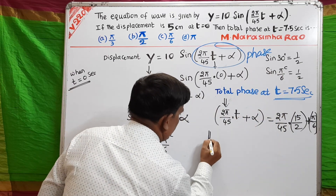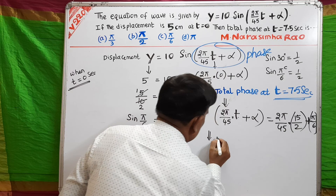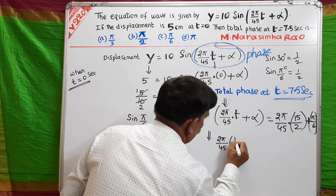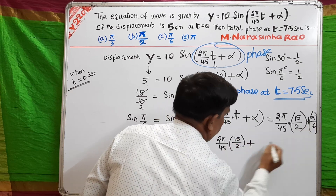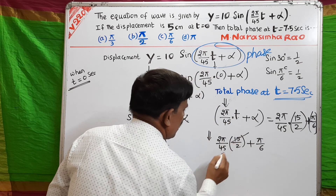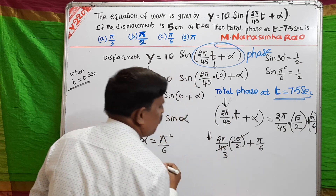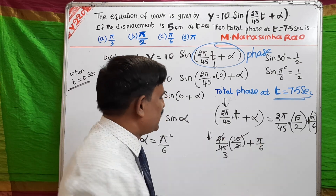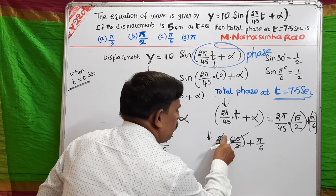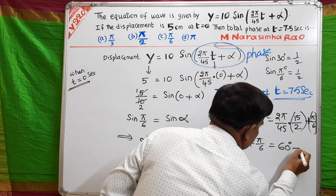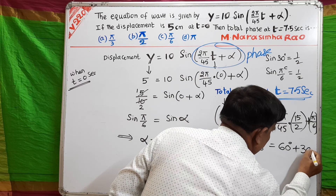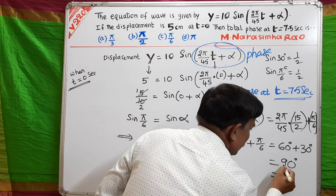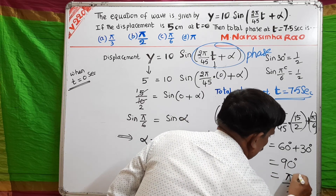Now computing: (2π/45) × (15/2) + π/6. The 15 and 45 cancel (15/45 = 1/3), and 2 and 2 cancel, giving π/3 + π/6. π/3 means 60 degrees, π/6 means 30 degrees, and 60 + 30 = 90 degrees, which is π/2 radians.